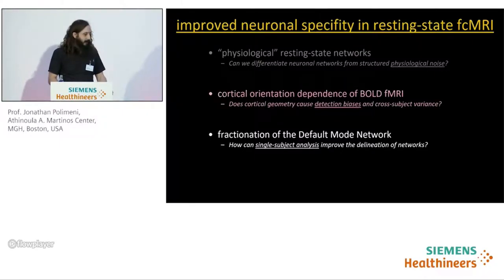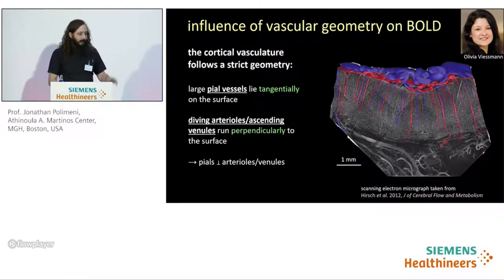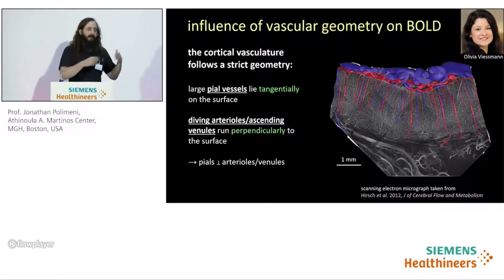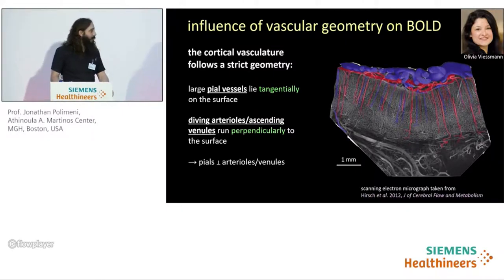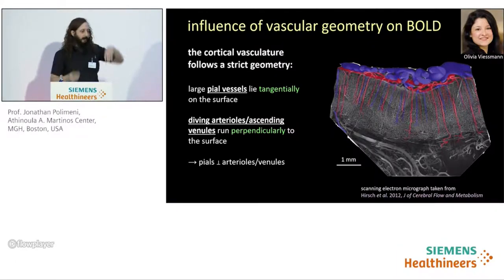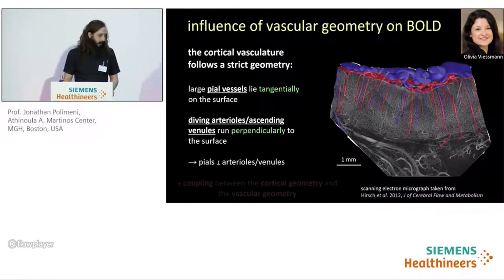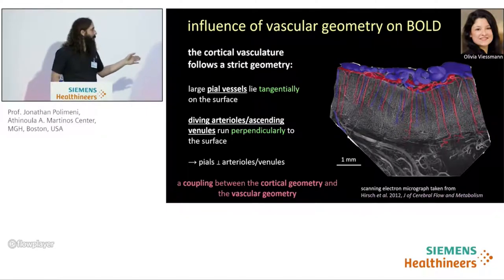Next, I'd like to talk about cortical orientation dependence of BOLD fMRI. This is work by Olivia Wiesman, who is working in our group. As voxels get smaller, we have to be mindful of the influence of vascular geometry on BOLD fMRI. We know that the cortical vasculature follows a strict geometry, with large vessels lying tangentially on the surface and diving arterioles and ascending venules penetrating perpendicularly through the cortex — meaning there's a coupling between the cortical geometry and the vascular geometry.